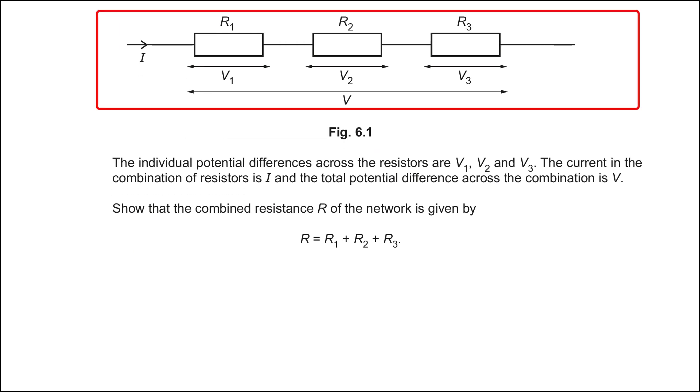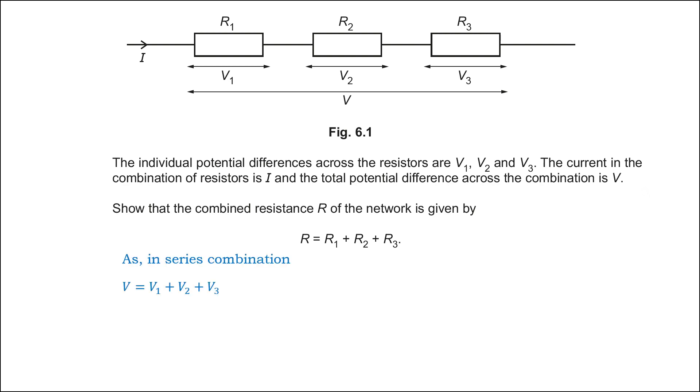As this is the series combination of resistances, the total potential difference is divided among three resistors. Thus, V equals V1 plus V2 plus V3. By Ohm's law, V equals IR. Thus, the potential difference across the resistor R1 is IR1, the potential difference across the resistor R2 is IR2, and so on. After dividing the equation with I, we get our desired expression.